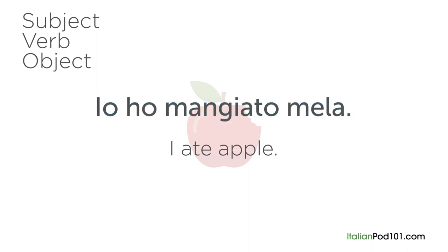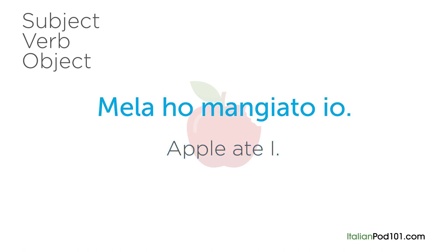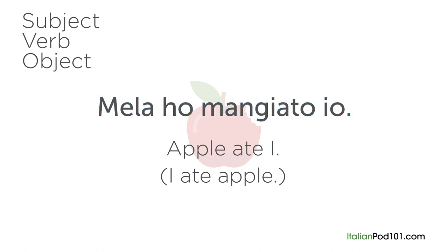Italian word order, however, is much more flexible than English. If we swapped the subject and object around, we'd get 'apple ate I' in English, which changes the meaning of the sentence completely. In Italian, however, the core meaning of the sentence does not change — it would still essentially be 'I ate an apple.' Mela ho mangiato io. As you can see, the word order of Italian is quite flexible.